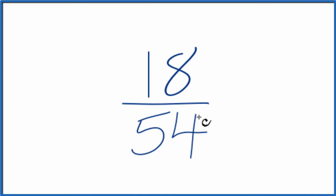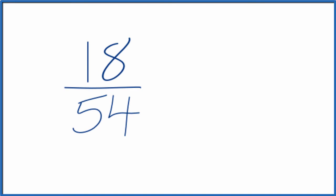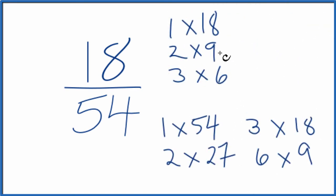So to do that, we need to find a common factor, something that goes into 18 and 54. So let's write the factors for 18 and 54. So these are the factors of 18 and 54.